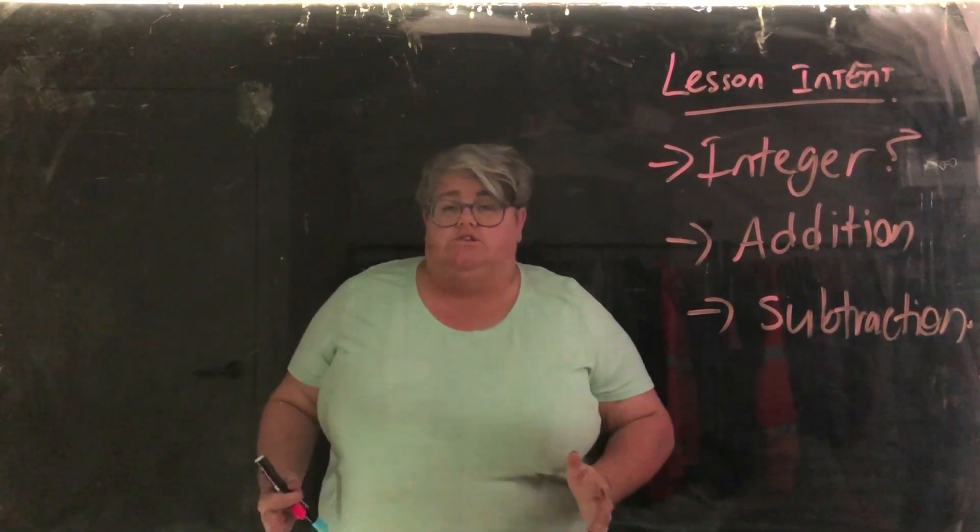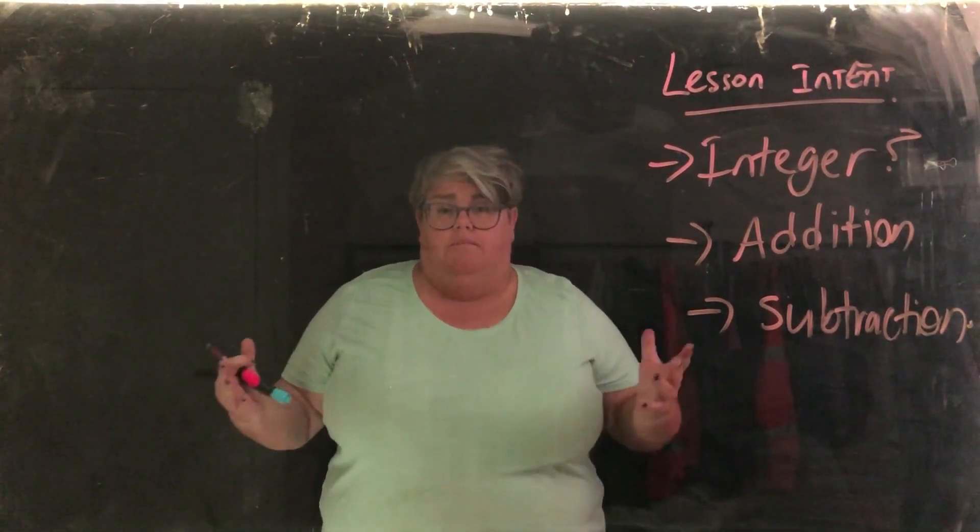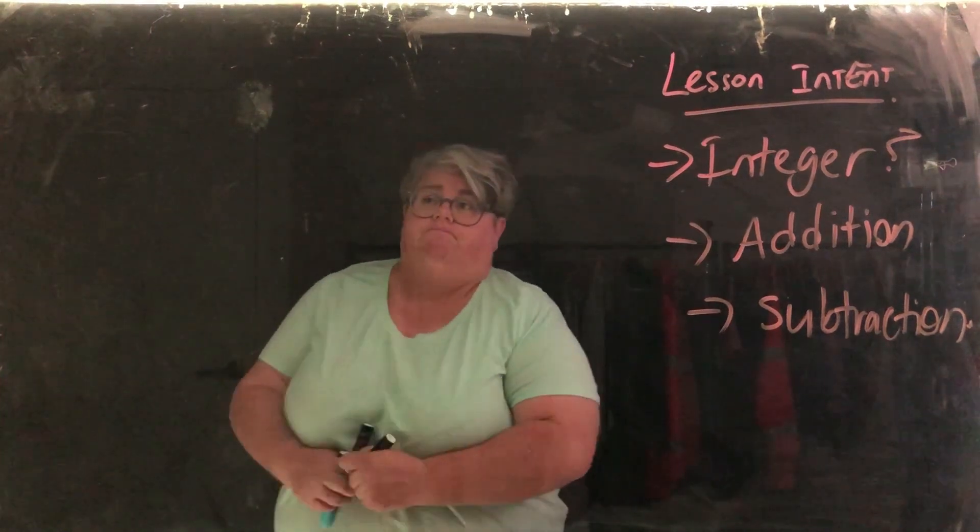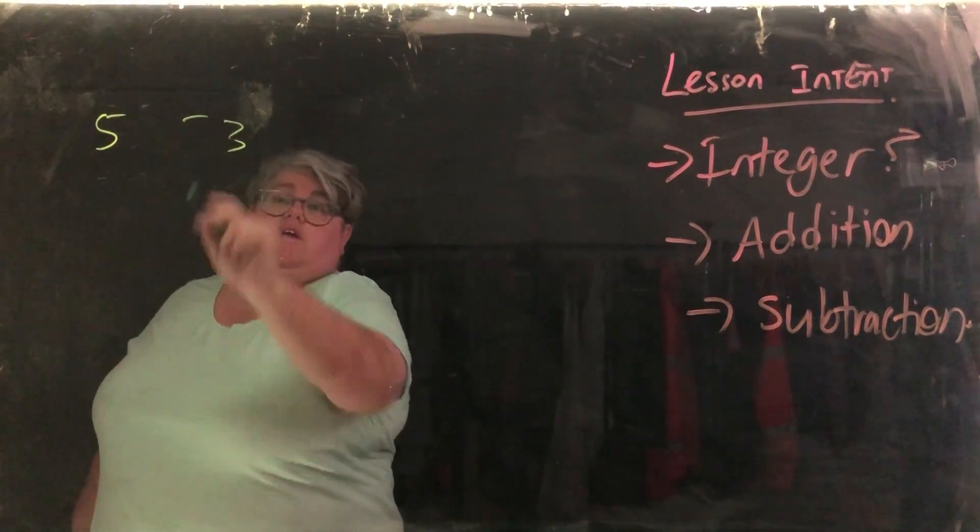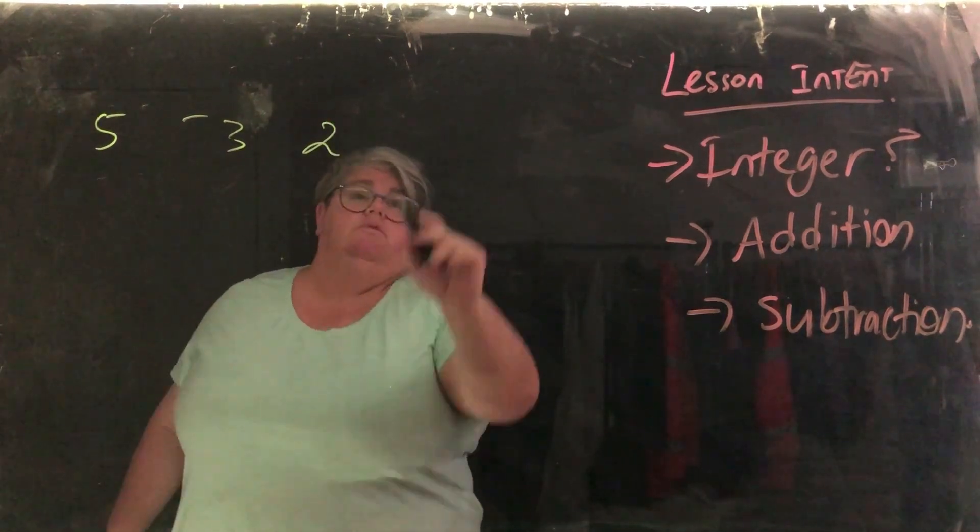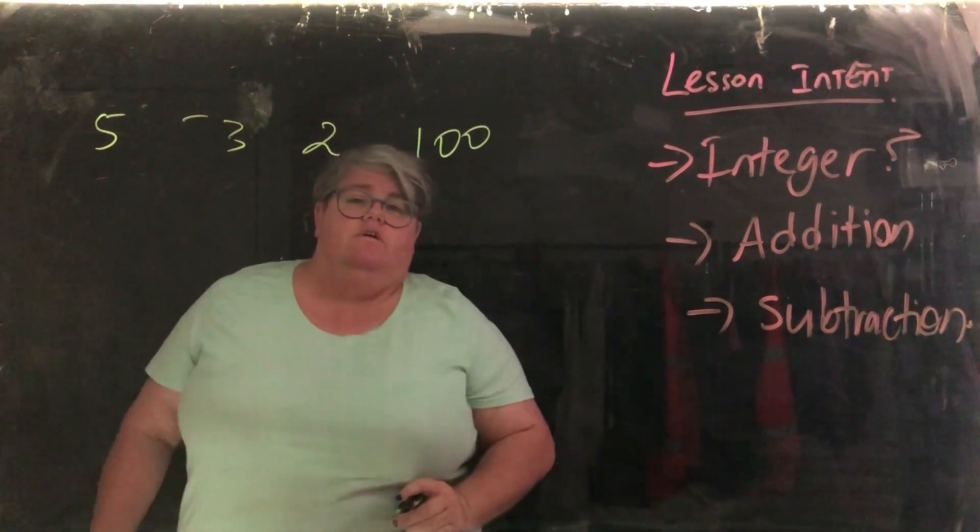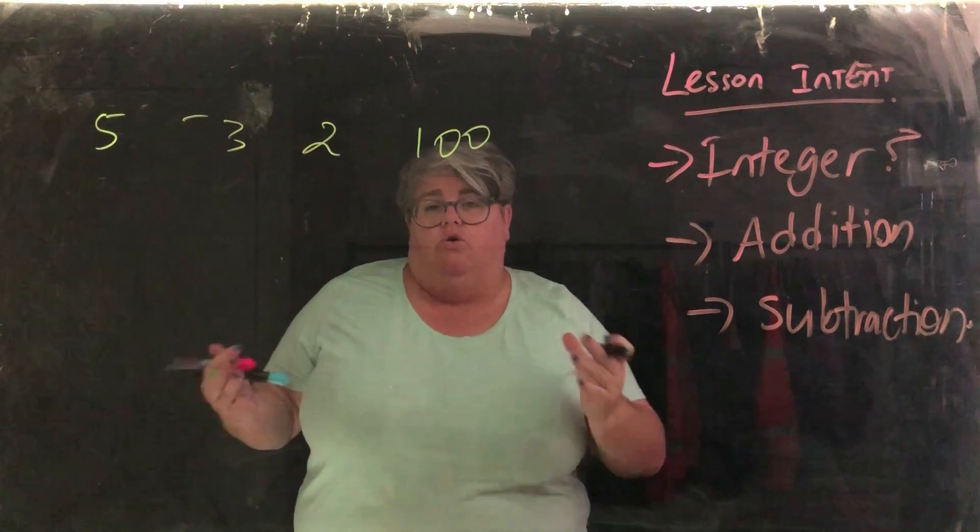When we talk about integers, all we're saying is that they're whole numbers. For example, 5, negative 3, 2, 100. They're all numbers but they're all in their whole form.